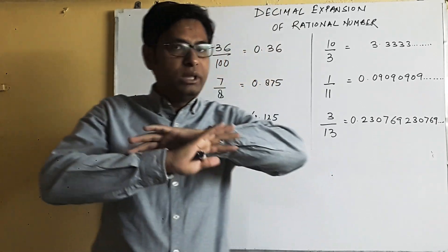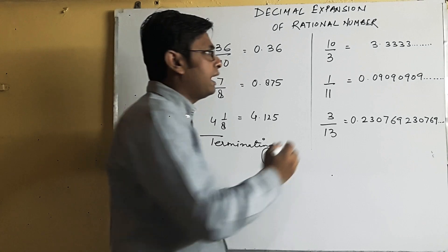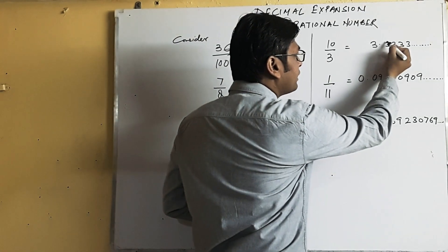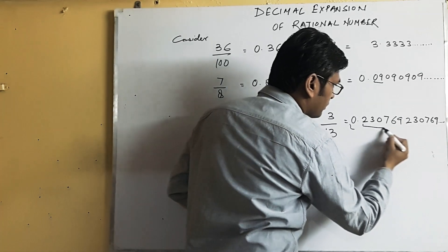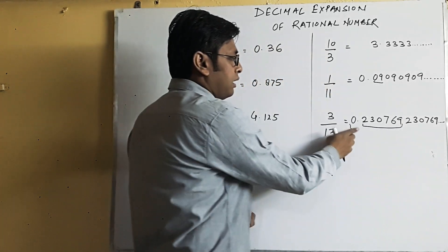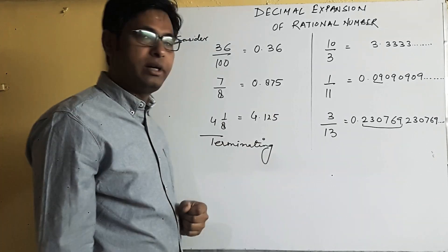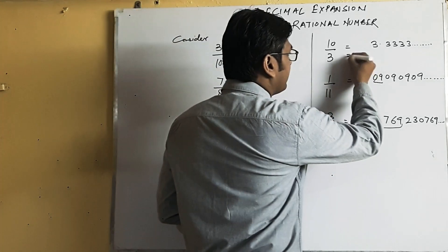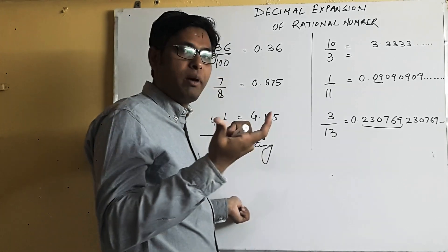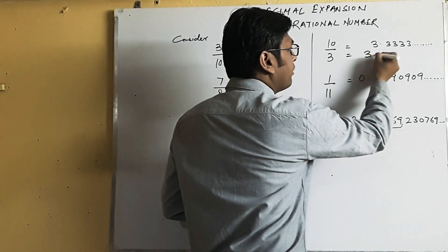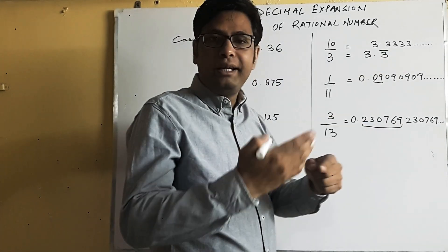What you have seen is that a digit or a group of digits repeating itself, repeating after a regular interval. So that repeating term, repeating digit or group of digits will be written with a bar.